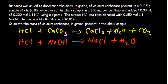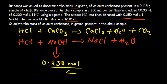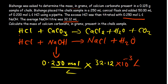In our second reaction, we had 0.250 moles per liter of sodium hydroxide, and its volume was 42.12 milliliters. We can quickly find the number of moles: 0.250 moles per liter multiplied by 42.12 milliliters — we convert milliliters to liters by dividing by 1000, or multiplying by 10⁻³, so we now have our volume in liters.